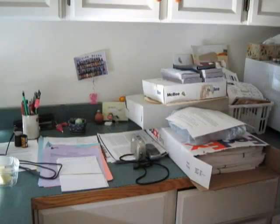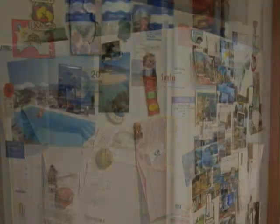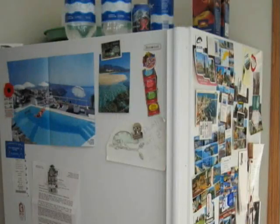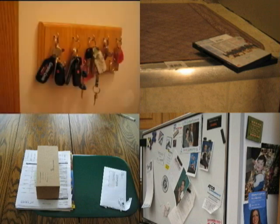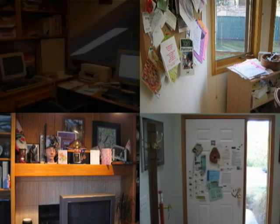Most homes have counters covered with papers, refrigerators overflowing with pictures and lists, and bulletin boards filled with messages and schedules. A major part of how people filter and manage this vast amount of communication information is through what we call contextual locations — places in the home that have developed specific meanings over time through the household's knowledge of each other's pathways and routines.